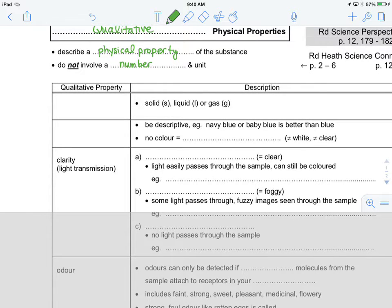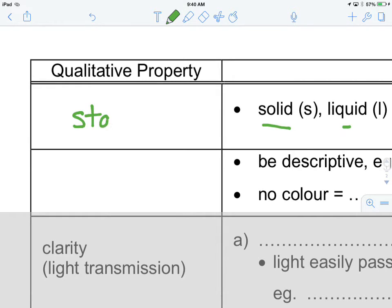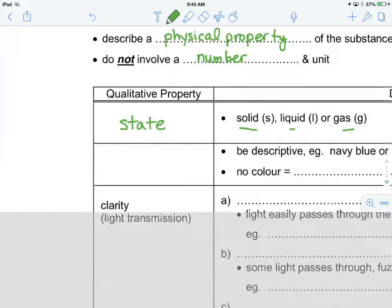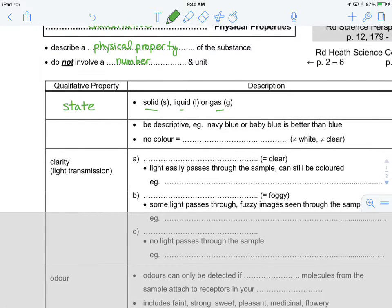These are some qualitative physical properties. When we talk about an object being in a form of a solid, a liquid or a gas, we're referring to a physical qualitative property known as its state. This is well known to many of you, the state that the matter is in.